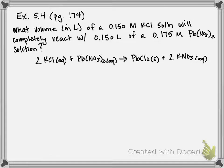So in this problem, it states that we have a molarity of 0.15 molar KCl that's going to react with 0.15 liters of a 0.175 molar lead nitrate solution. So what they want to know is what volume of our KCl solution is going to react. So here we have three given variables: a molarity of our KCl, a volume and a molarity of our lead nitrate. And they also give us a nice balanced equation to help us with this problem.